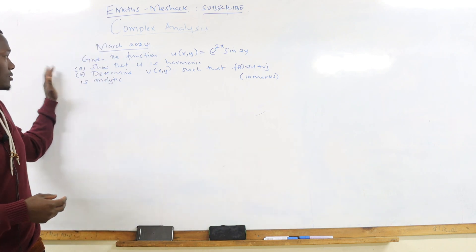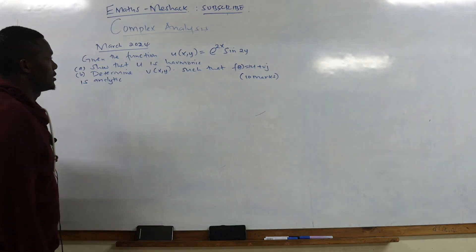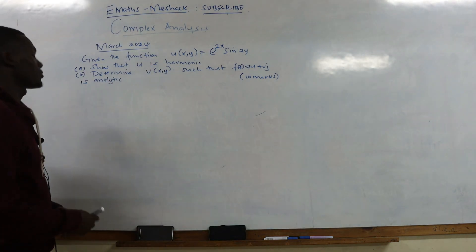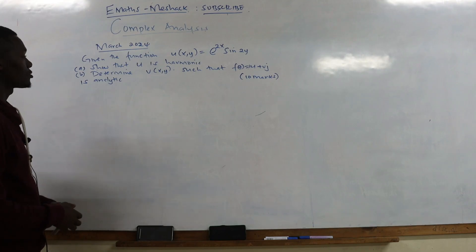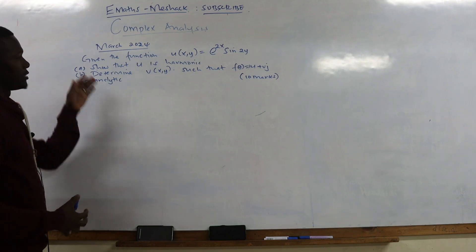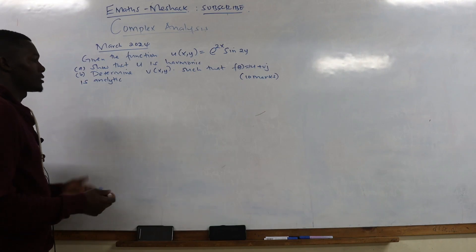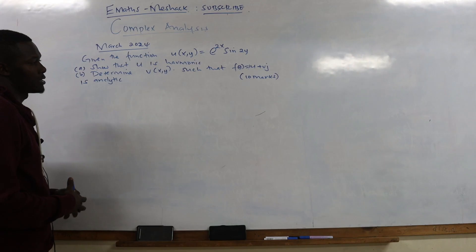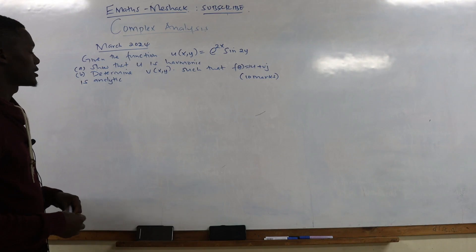Let's check our second question. Given the function u, which is a function of an exponent and trigonometric function — e^(2x) sine of 2y — the first part asks us to show that u is harmonic. The second part asks us to determine the conjugate v(x,y) such that the whole function f = u + iv is analytic.